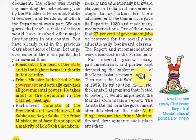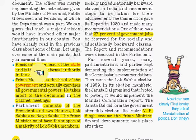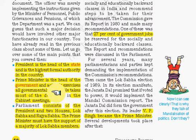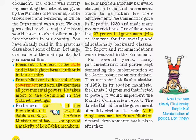First and most important, the president is the head of the state and the highest formal authority in the country. Second, the prime minister is the head of the government and actually exercises all governmental power — he takes most decisions in cabinet meetings. Then parliament consists of two houses: Lok Sabha and Rajya Sabha.